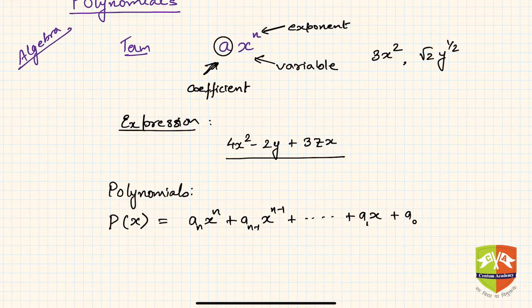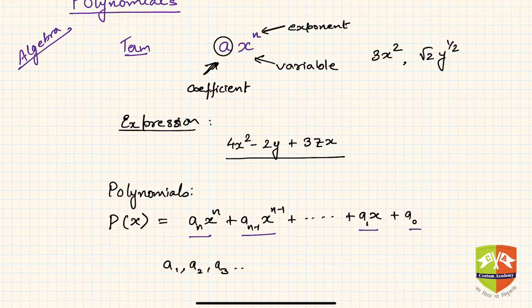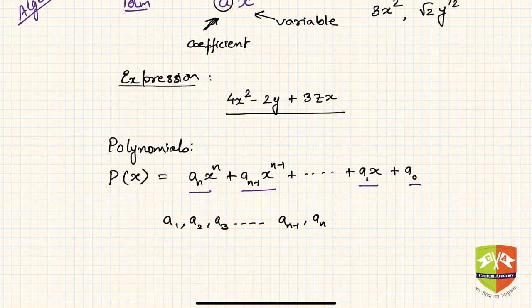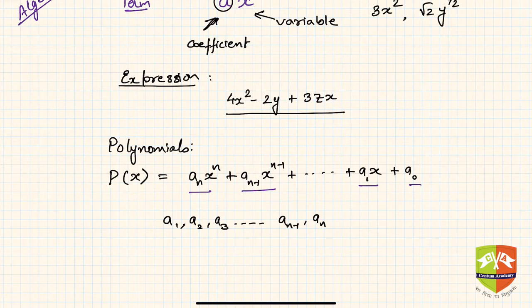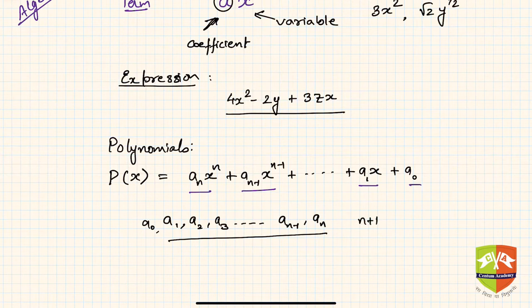If you see, there are multiple terms here — each part is a term. The coefficients are written as a₀, a₁, a₂, … up to aₙ. The subscripts are used because we don't have enough distinct alphabets to name each coefficient separately — it's a smart convention. So starting from a₀, there are n+1 coefficients in total.